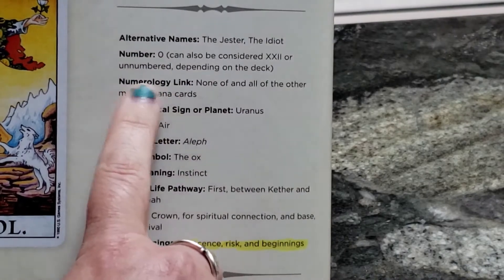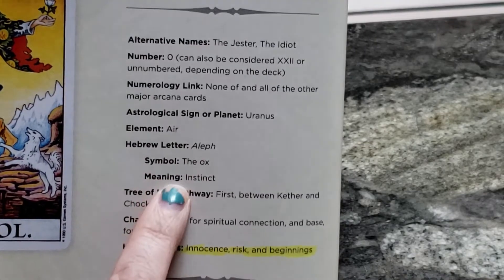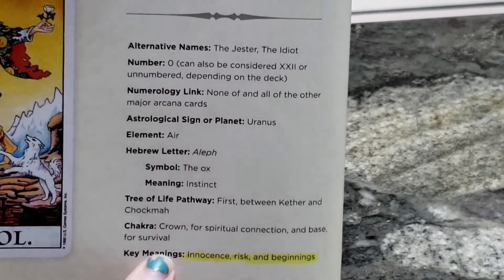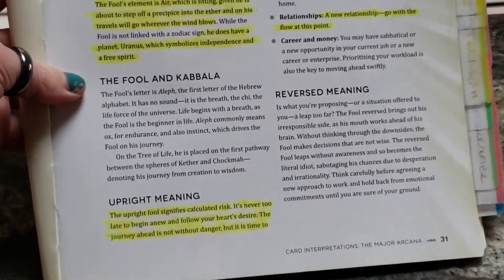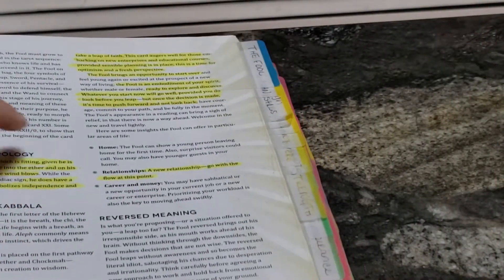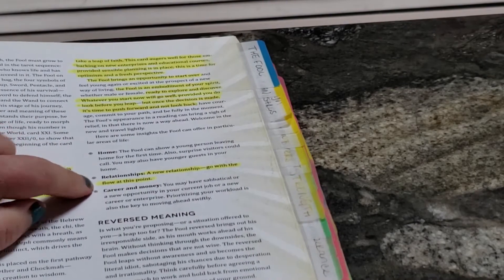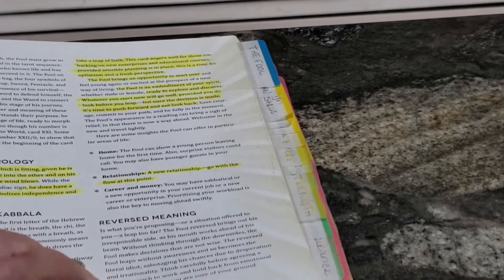Alternate names, the number, the numerology link, the astrological sign, the element, the Hebrew letter, the symbol, the meaning, the tree of life, the chakra, and the key meaning. So it does this for every Major Arcana. And then on the flip side, it gets into the astrology, the Kabbalah, the upright meaning, what it means when it's upright. And then it talks about if it's for the home, for the relationship. Look how little that relationship is. That's romance. Okay. Career and money. And then if it's reversed.